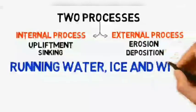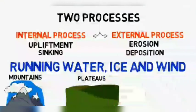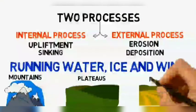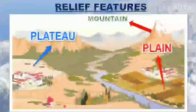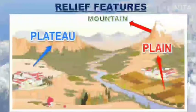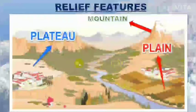Broadly, we can group different landforms depending on elevation and slope as mountains, plateaus, and plains. We now know what forces and processes are responsible for the formation of various landforms. The surface of the earth is not uniform everywhere — as you can see in this image, the formation is not similar; the surface of the earth is not uniform.